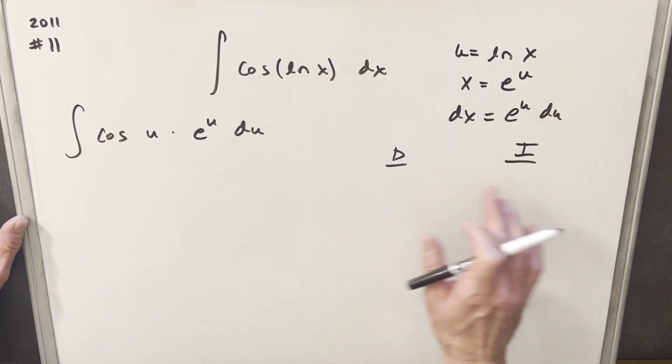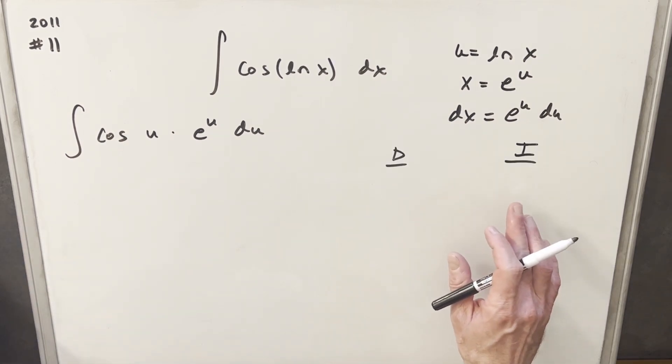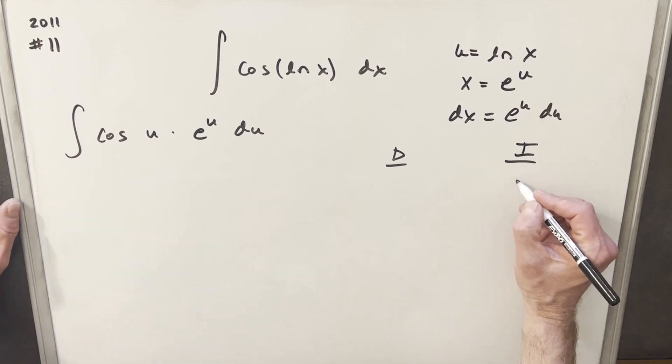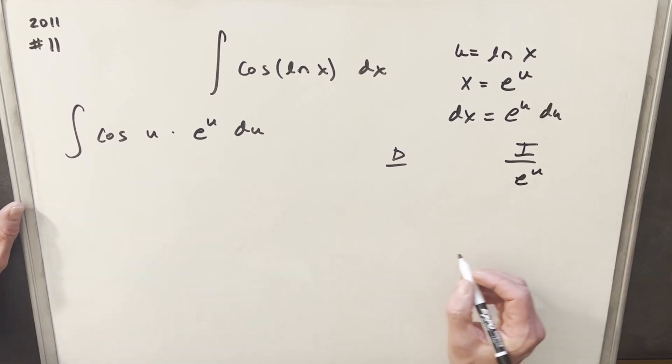Okay, so we have two columns, one to differentiate, one to integrate. And this is the case where it really doesn't matter what you choose, right? It's going to work fine either way because both are easy to differentiate or integrate, so I just kind of prefer to integrate e to the u, but you could do it the opposite way very easily.